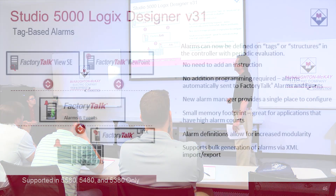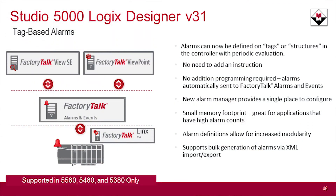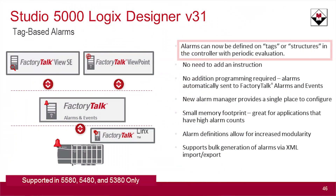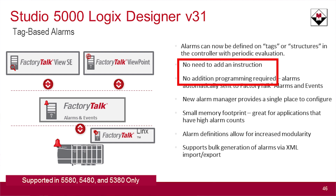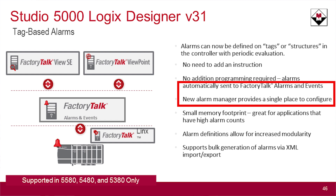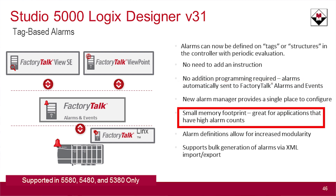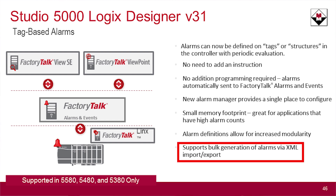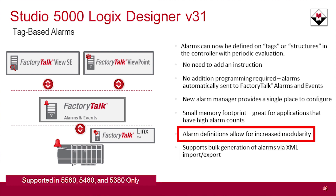Version 31 also introduces a new type of alarm: tag-based alarms. No longer do you need to write an instruction to create it. The instruction was nice but took up a lot of memory, and with a large application with many alarms you'd often need a larger controller just to handle them. Now it's a checkbox in the tag editor — you manage it all there, there's no programming to write. It's delivered as part of the FactoryTalk Alarms and Events server, with a small memory footprint. You can also do bulk alarm generation, export to XML, create them there, and import them back in. It also supports modularity — add-on instructions can have those alarms embedded very easily.